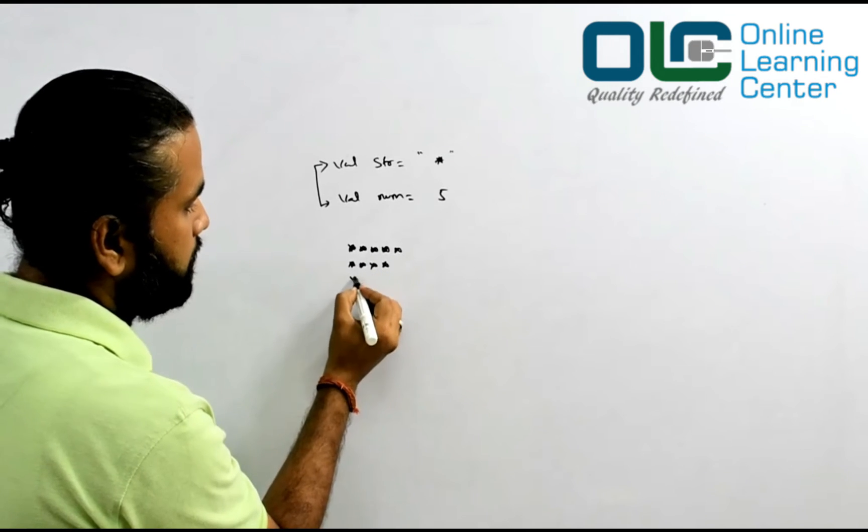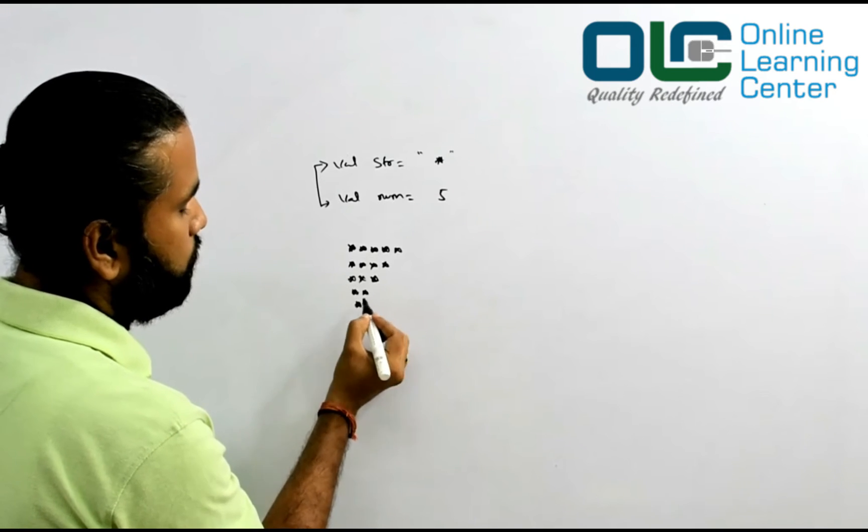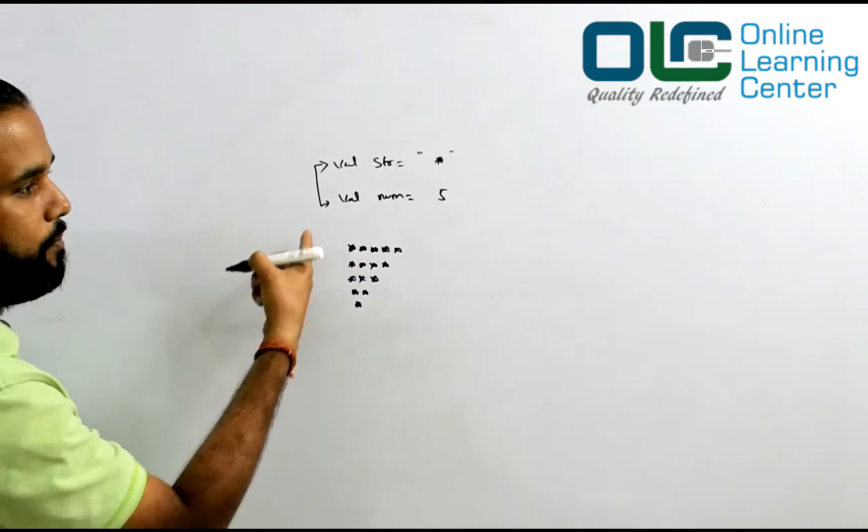four times. Next line, three times. Next line, two times. Next line, one time. So this would be your output.